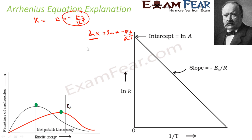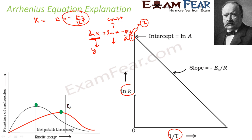With this equation we draw a graph. ln K represents the rate, which changes with temperature — so that's the variable Y. ln A is a constant, the intercept. Since the equation has 1/T, we take 1/T as X. So on the X-axis we plot 1/T, and on the Y-axis we plot ln K.